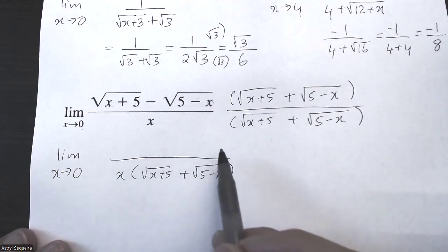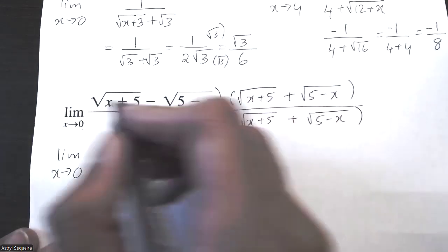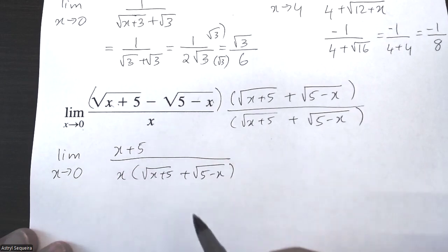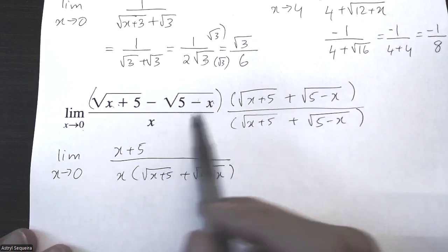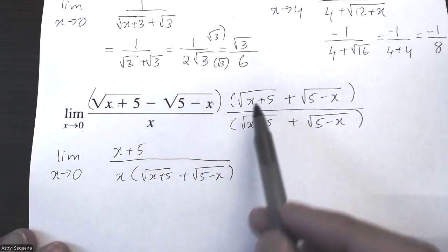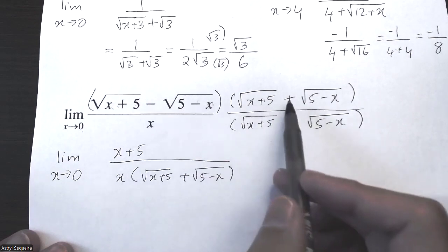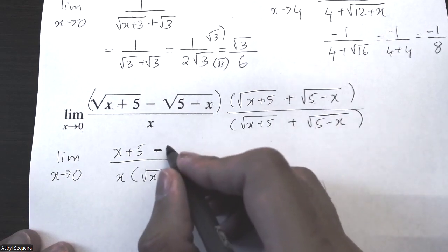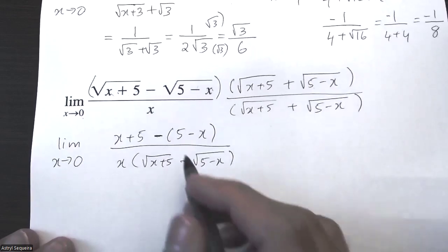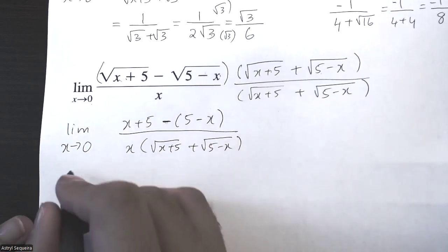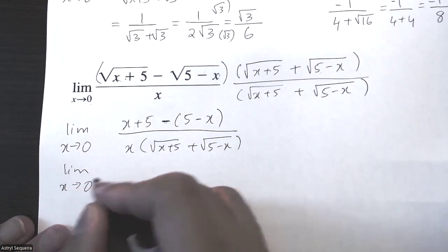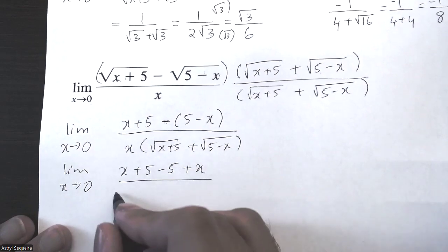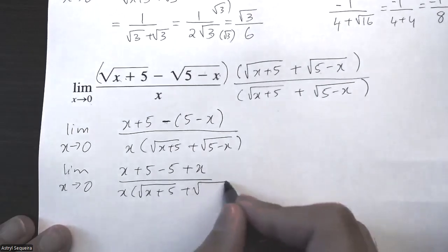The bottom is fully factored so I just write that out. For the top I'll FOIL these two brackets: first term times first term is just x plus five, the two middle terms will cancel each other out so I won't discuss them, and then last times last — negative times positive is negative, and root of five minus x times root of five minus x is just five minus x. Make sure to keep it in a bracket. Next I'll distribute this negative into the bracket, and the bottom stays the exact same.